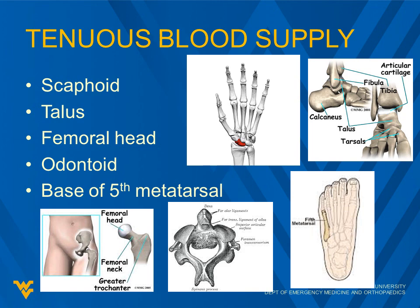There are a few bones in the body — here's five here — but we do know there are others that have a bit of a tenuous blood supply. These are some of the more common ones, though, especially the scaphoid. The talus and femoral head as well, and then finally, the odontoid and the base of the fifth metatarsal.